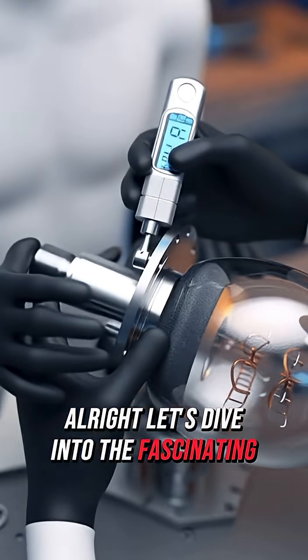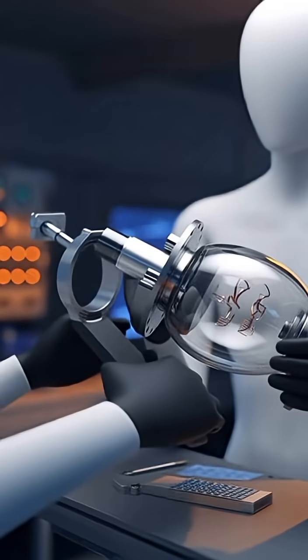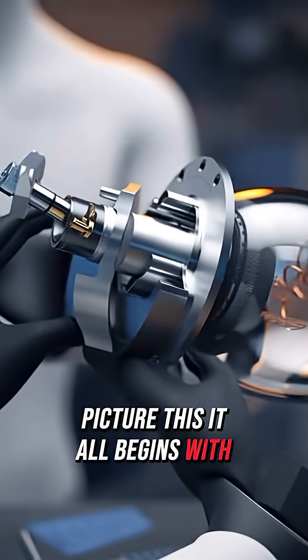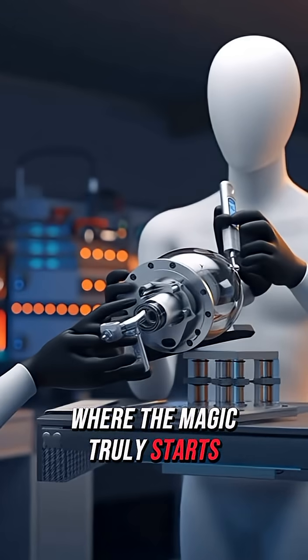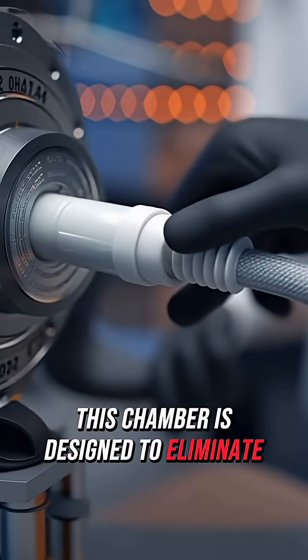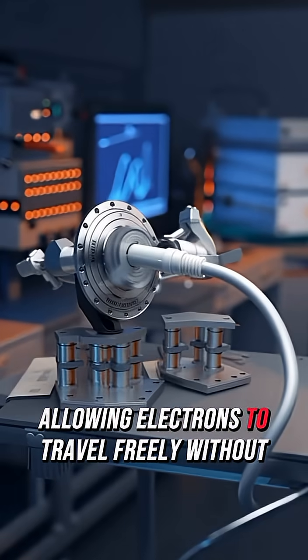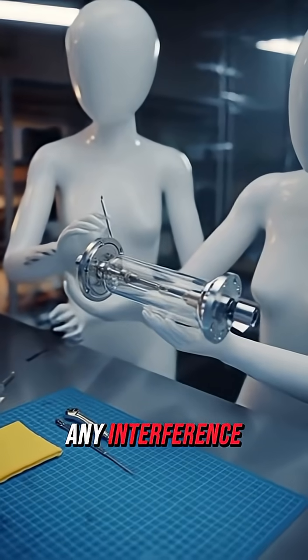All right, let's dive into the fascinating world of X-ray tube production. Picture this: it all begins with the creation of a vacuum chamber, where the magic truly starts. This chamber is designed to eliminate air, allowing electrons to travel freely without any interference.